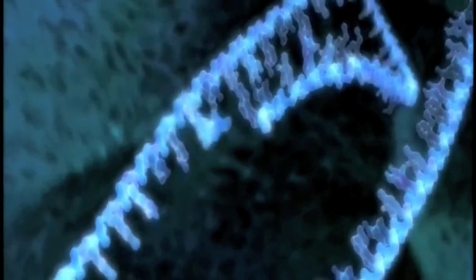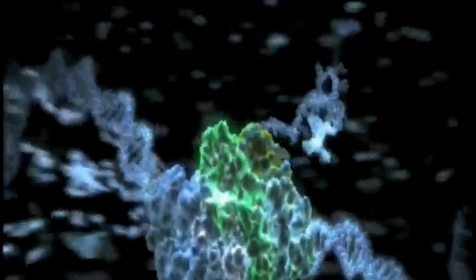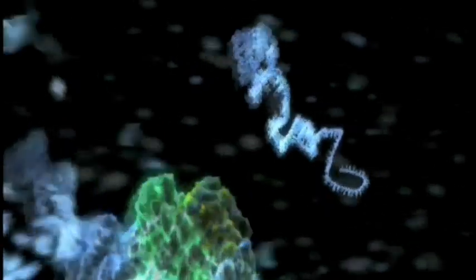Here we see this copy, a messenger RNA molecule, being constructed inside the polymerase as individual bases are positioned and added to the growing strand. Now we see the polymerase in action from the outside as it spits out the messenger RNA transcript.